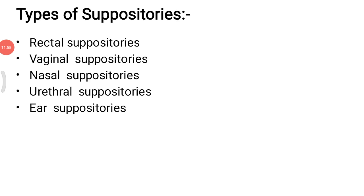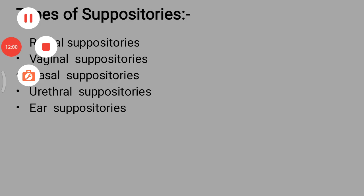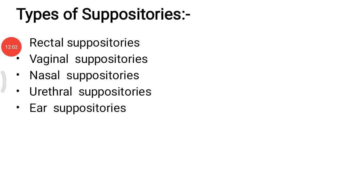Types of suppositories: there are five types. First, rectal suppositories; second, vaginal suppositories; third, nasal suppositories; fourth, urethral suppositories; fifth, ear suppositories. These are the five types of suppositories. Now we discuss them one by one.